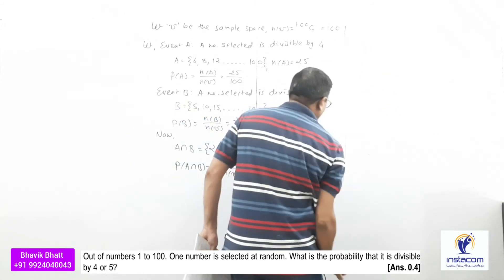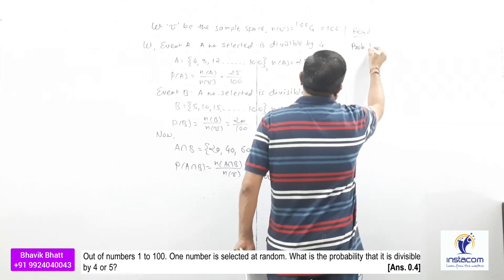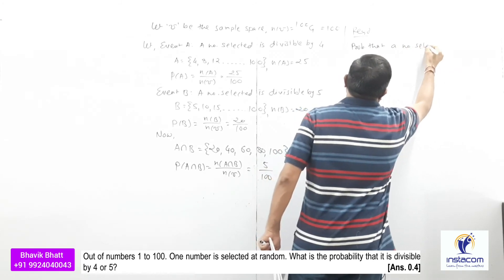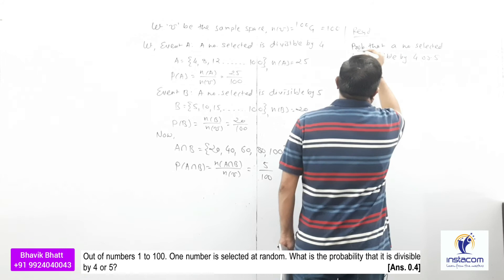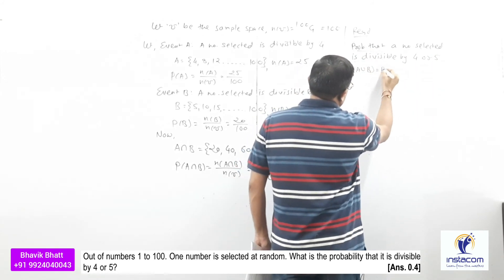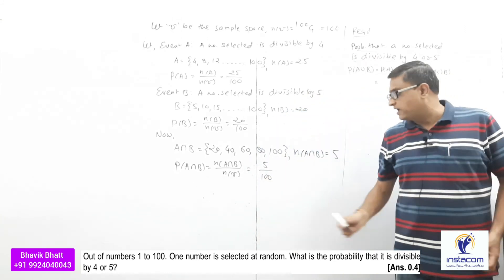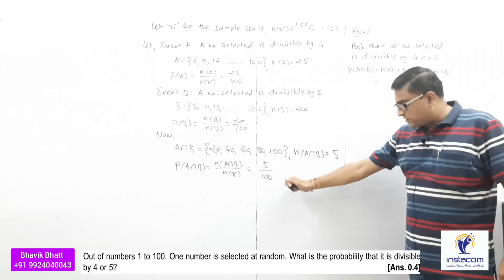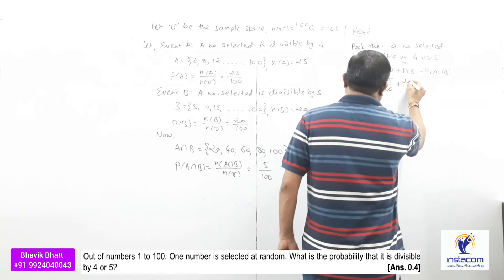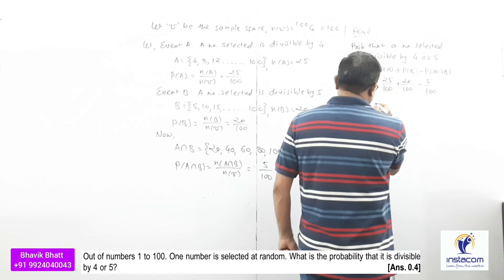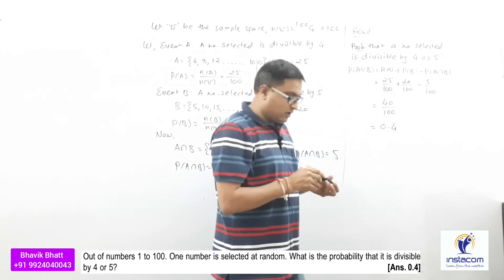Now for the requirement: probability that a number selected is divisible by 4 or 5, that means P(A∪B). Using P(A) + P(B) − P(A∩B) = 25/100 + 20/100 − 5/100 = 40/100 = 0.4. Take a screenshot of this.